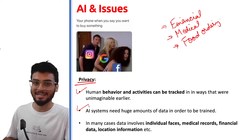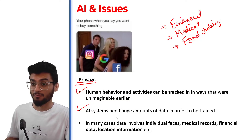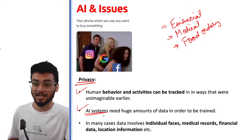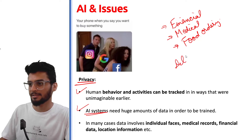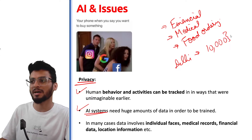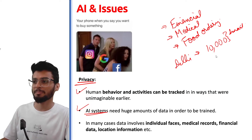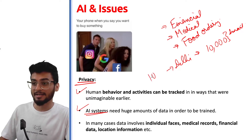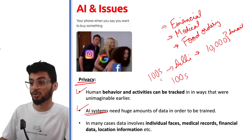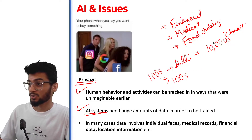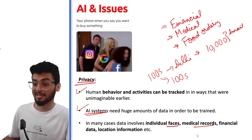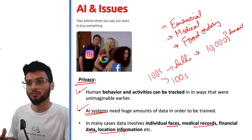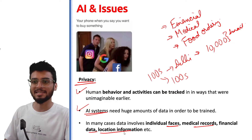Anyone who has access to all that data can predict your behaviour without your consent. AI technology cannot work without a lot of data. For example, in a place like Delhi, let's assume a minimum of 10,000 people are using smartphones — and that's not even realistic. But there are hundreds of cities like Delhi in India, and hundreds of countries like India. You can imagine the amount of data being collected without your consent — your face, medical records, financial data, where you travel — all data is stored. This is an issue with AI: you have no privacy.